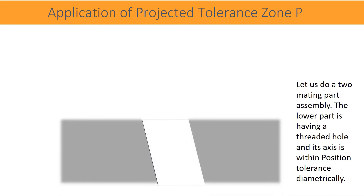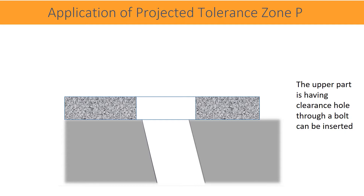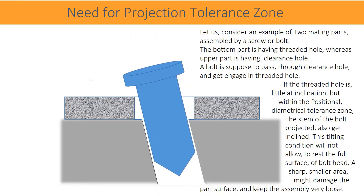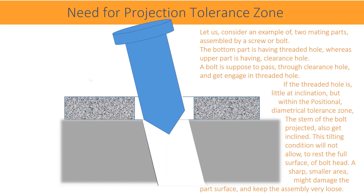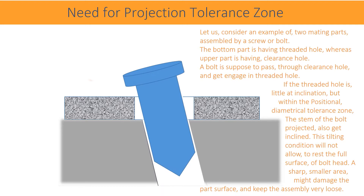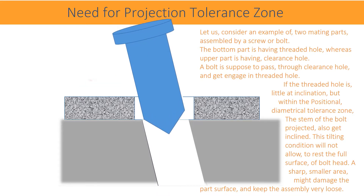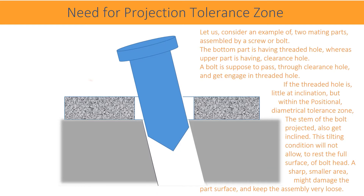Let's have a two-mating part assembly. The lower part has a threaded hole and its axis is within position tolerance diametrically. The upper part has a clearance hole through which a bolt can be inserted. A bolt is supposed to pass through the clearance hole and get engaged in the threaded hole. If the threaded hole is slightly inclined but within the positional diametrical tolerance zone, the stem of the bolt projected also gets inclined. This tilting condition will not allow the full surface of the bolt head to rest.